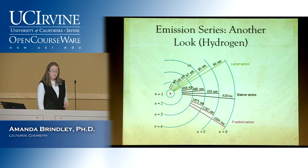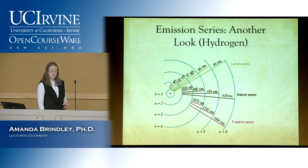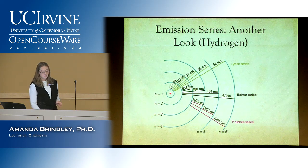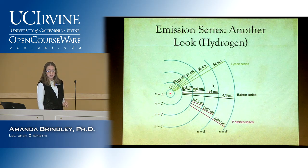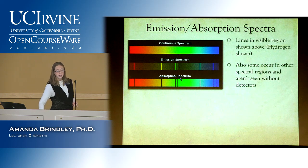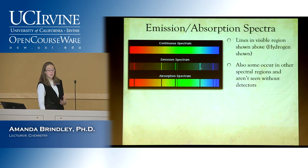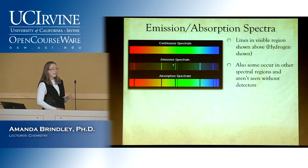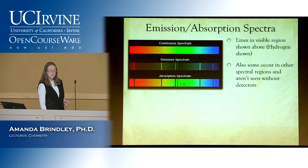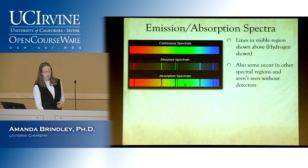Each series is a set of transitions discovered by the person it's named after. You can see these different light spectra with spectroscopes. The visible region of hydrogen looks like lines of distinct colors. If you've done flame tests, this is what you're actually seeing. The emission spectrum shows what hydrogen emits when electrons are excited and fall back down — and the absorption spectrum is the inverse.